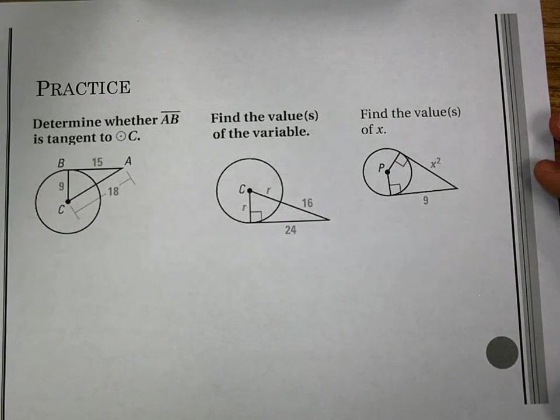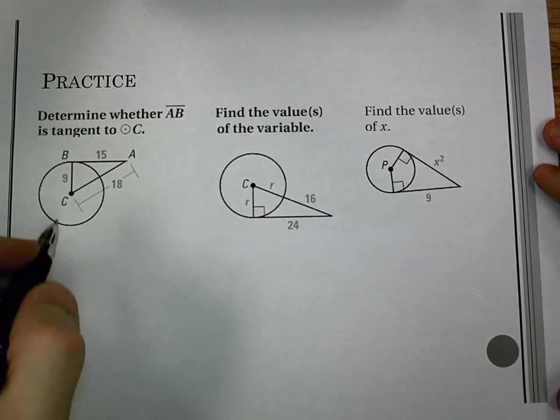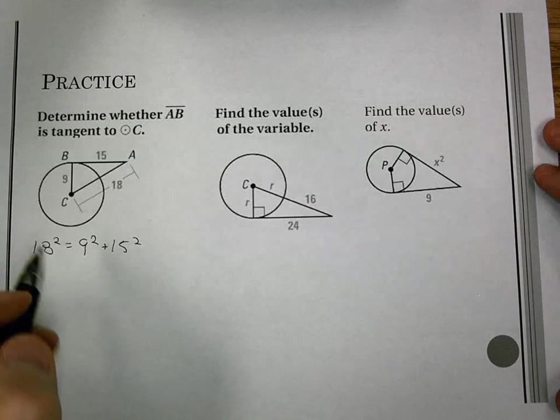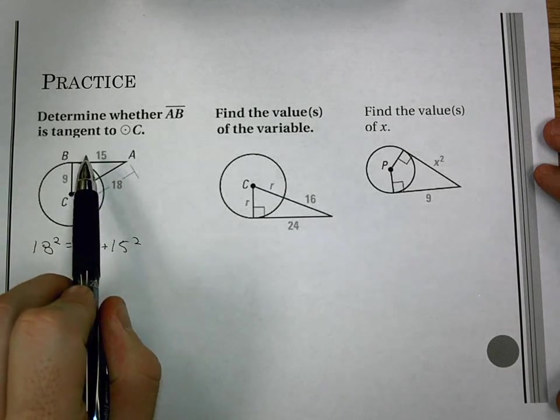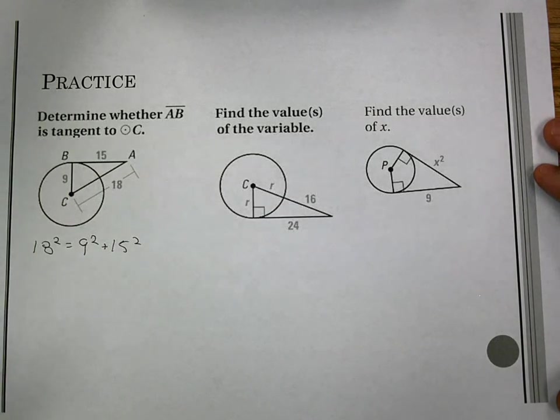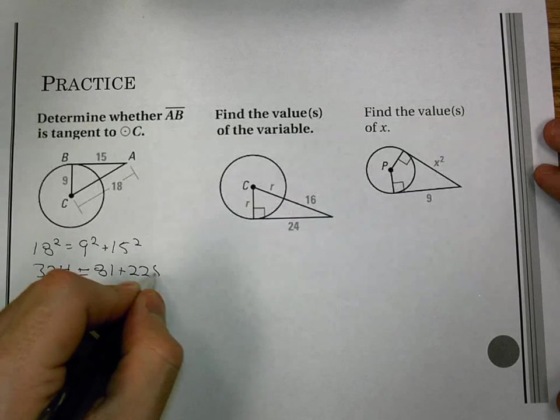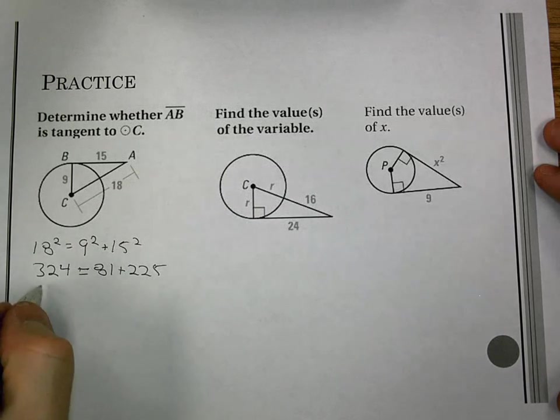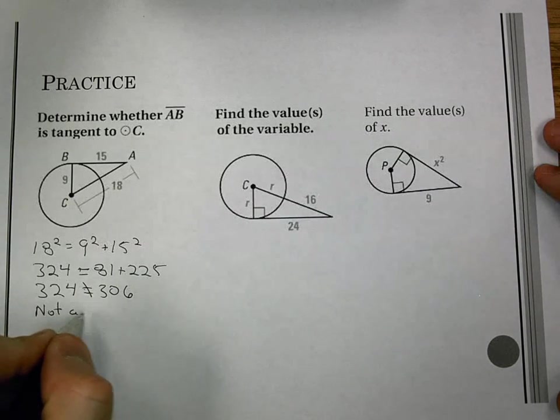So we're going to finish up with a couple examples. We're kind of integrating each one we've done. So the first one, determine whether we have a tangent to our circle. Here I'm going to test, and I want this to be by Pythagorean theorem, that 18 squared equals 9 squared plus 15 squared, because if that's true, that makes this the hypotenuse, which means this is a right angle, which means AB is a tangent. For 18 squared, we get 324, and that's equal to 81 plus 225. 81 plus 225 gives me 306, which is not equal, so we're going to say not a tangent.